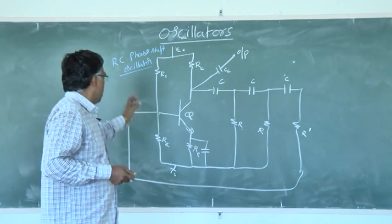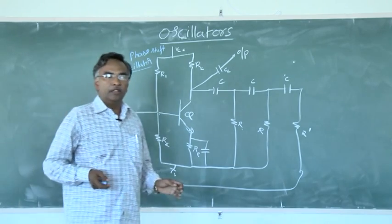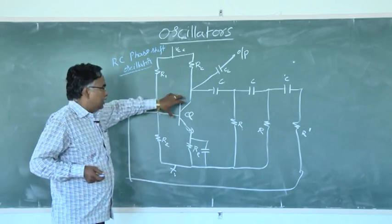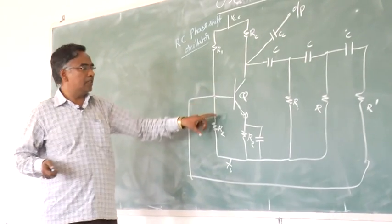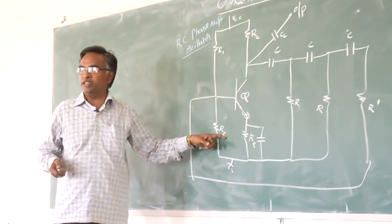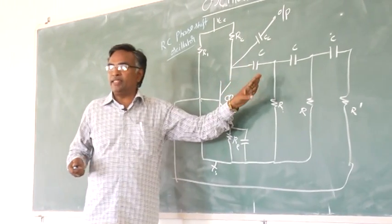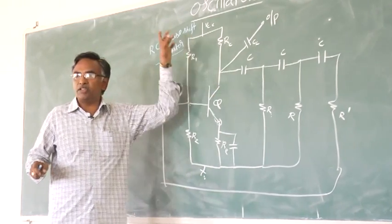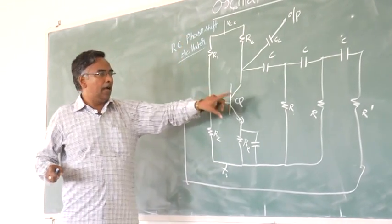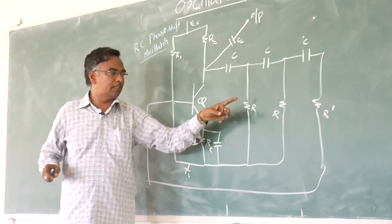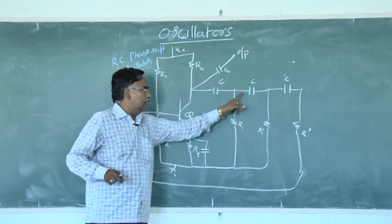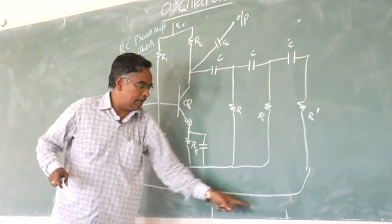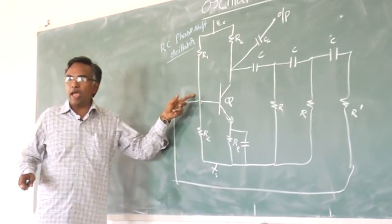Coming to the RC phase shift oscillator — it is a low frequency oscillator. This oscillator has one amplifier, which is a self-biased amplifier circuit, and there are feedback elements: resistors and capacitors. Due to this, it is called the RC phase shift oscillator. It has three RC sections, and the output of the third section is directly connected to the input of the amplifier.